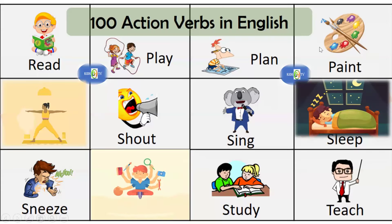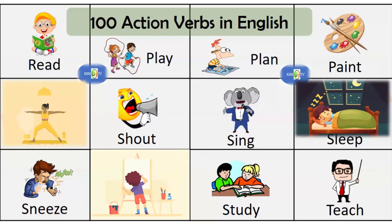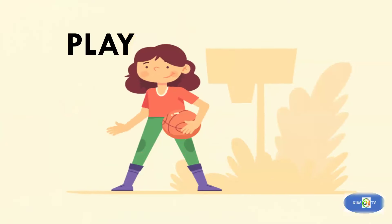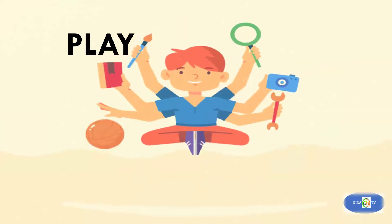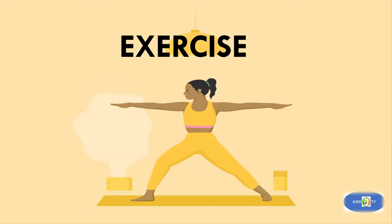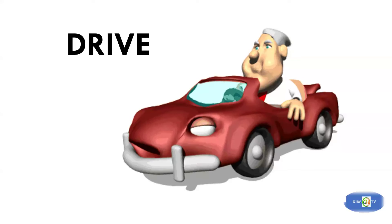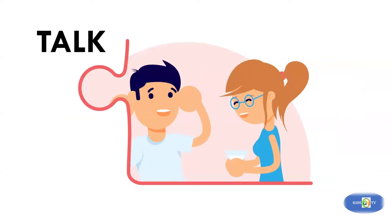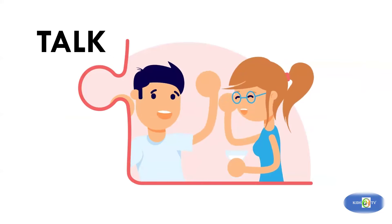100 action verbs in English. Let's go. Play, play. Exercise, exercise. Drive, drive. Talk, talk.